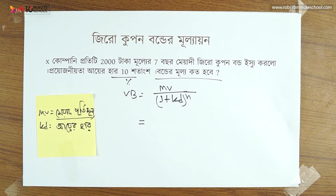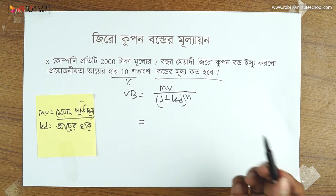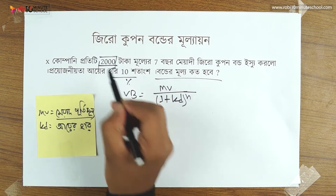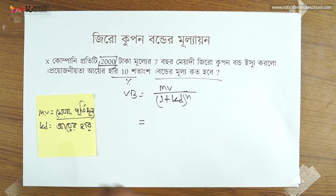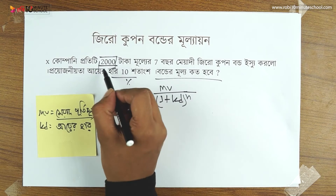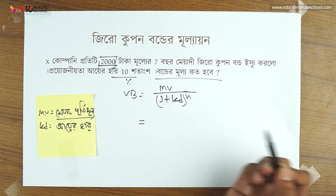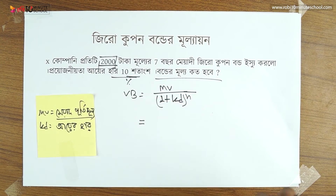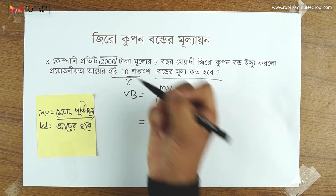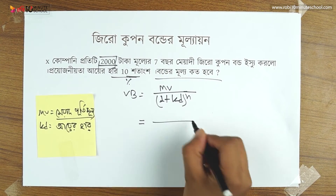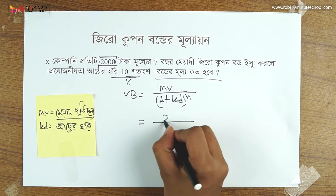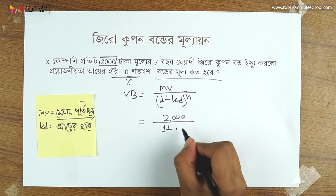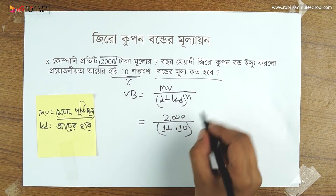MV means that we have the maturity value. Here is our maturity value. The maturity value is the face value, and MV is now 2000. 1 plus KD is 10%. MV is 2000, and then 1 plus KD to the power N.